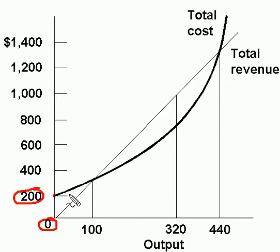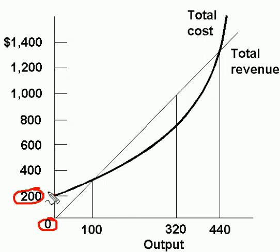Now how does that give us a clue as to what fixed costs are? Well, remember if you're producing nothing, that means there's no variable cost. So if you're producing nothing and you're still incurring some costs, that must mean that the costs you are incurring are only attributable to your total fixed cost.